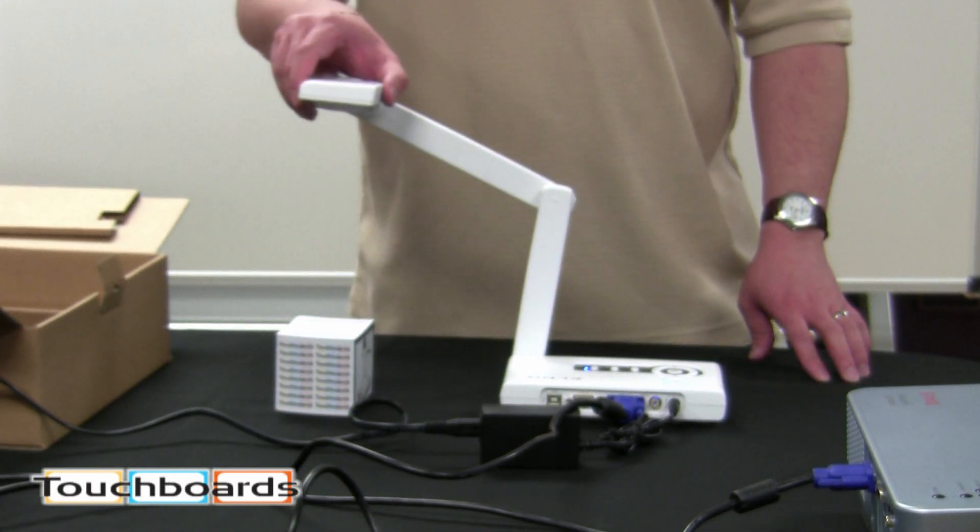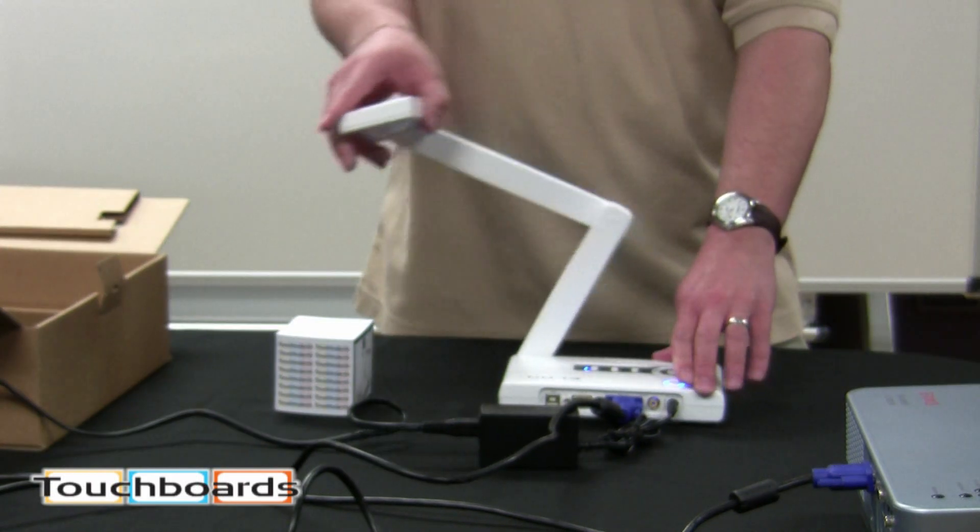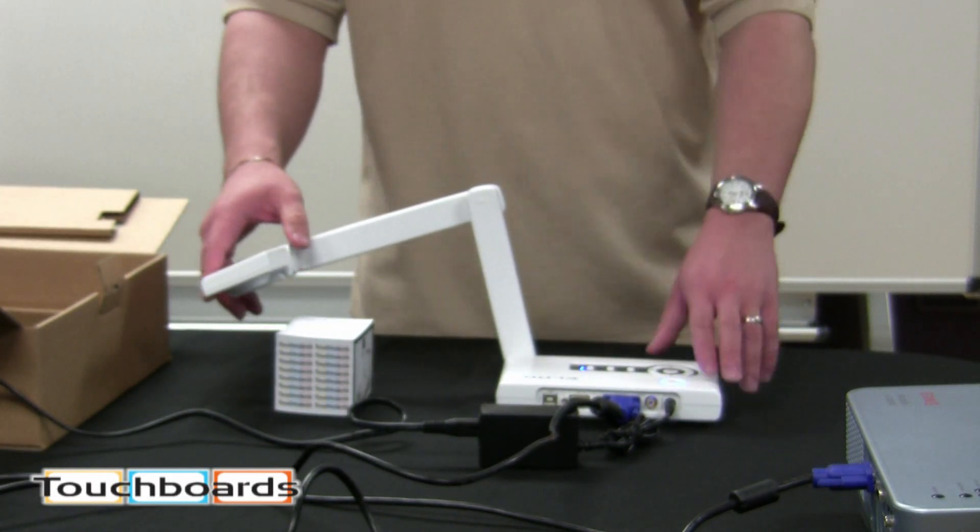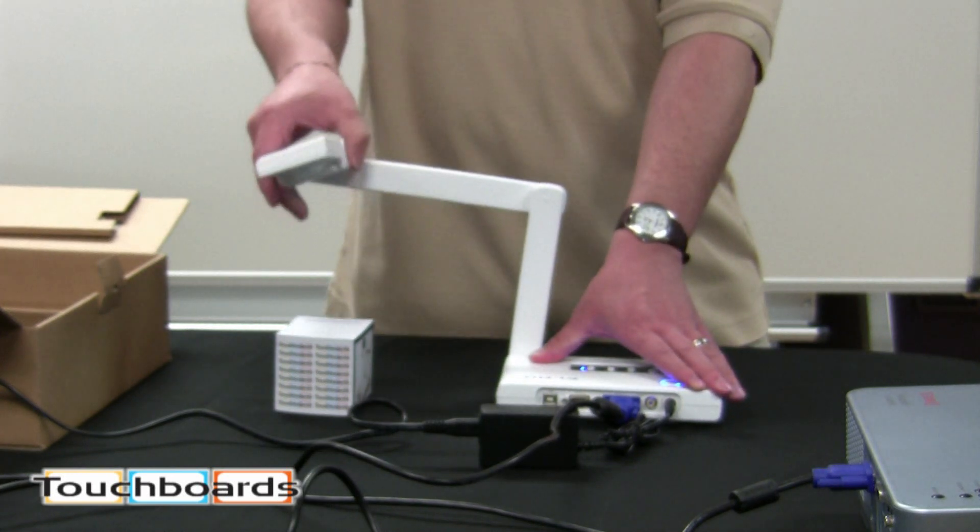Very small, very easy-to-use document camera. Got a lot of adjustment. Put pretty much anything you want underneath it. You will be able to project it. Auto-focus. Zoom. Brightness controls. You can save your images to the unit. You can also save to the computer.